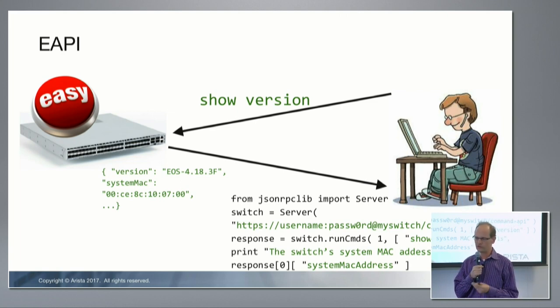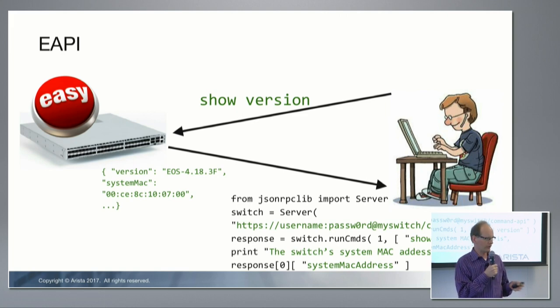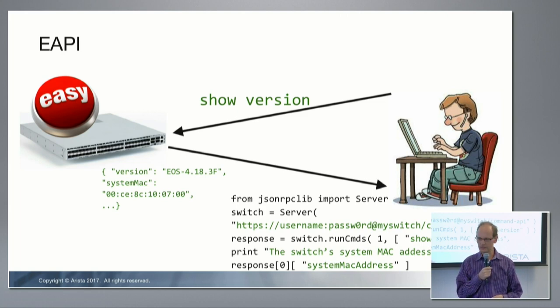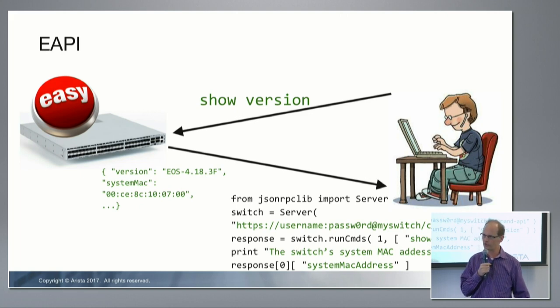What's great about this is it's so easy to use, and it does everything — you have access to all of the state of the box. Anything you can get from the CLI, you can also get through eAPI. Most commands give you JSON back. For some platform debugging commands you get ASCII, but for all the standard stuff — IP routes, counters, interface status — you'll get back a JSON document.